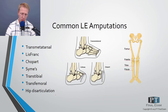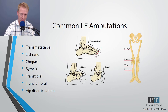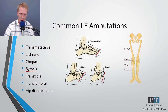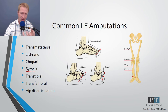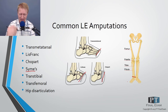The common lower extremity amputations, listed from bottom to top, are: the transmetatarsal, going right through the metatarsals; the Lisfranc, where you spare the tarsal bones; the Chopart, where you take everything except the talus and calcaneus; and the Symes, which is an ankle disarticulation through the malleoli, where they maintain the calcaneal fat pad and reattach it at the distal end of the tibia.